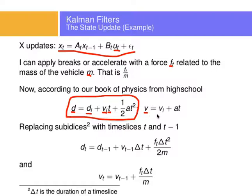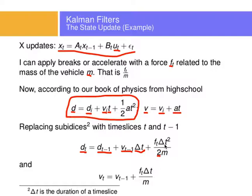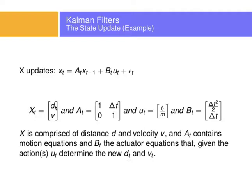From high school physics, the next distance is the initial distance plus the initial velocity times the time elapsed, plus one half times the acceleration times time squared. And the new velocity is the initial velocity plus acceleration times time. Using subindices with t: d_t equals d_{t-1} plus v_{t-1} times delta_t plus one half times force over mass times delta_t squared. And the velocity v_t is the previous velocity plus acceleration times delta_t. These are the exact same variables that we want our state to have — distance and velocity.